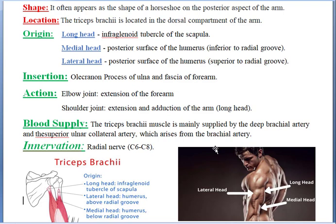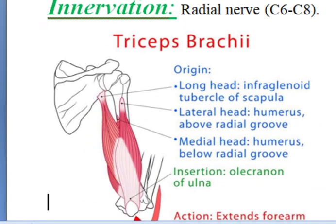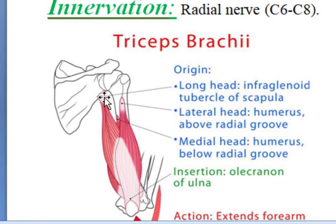What is its origin? The triceps has three heads and gets its origin from three different regions: the long head, the medial head, and the lateral head. You can see here the long head gets its origin from the infraglenoid tubercle of the scapula. In the scapula there is the glenoid cavity, and there are the supraglenoid and infraglenoid tubercles — the long head of the triceps originates from the infraglenoid tubercle.